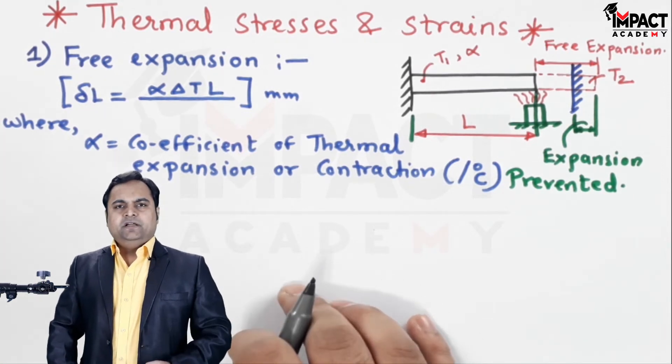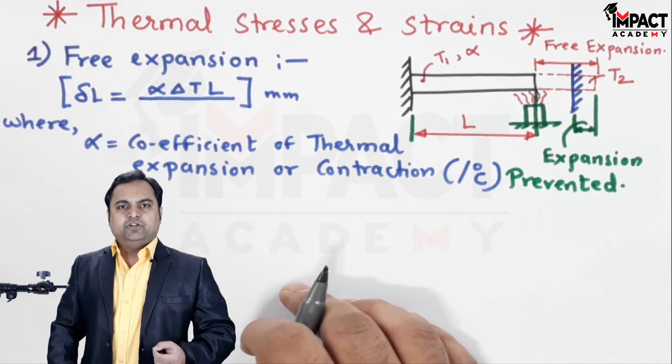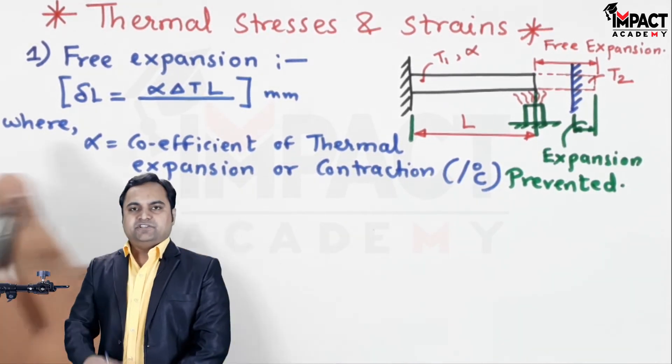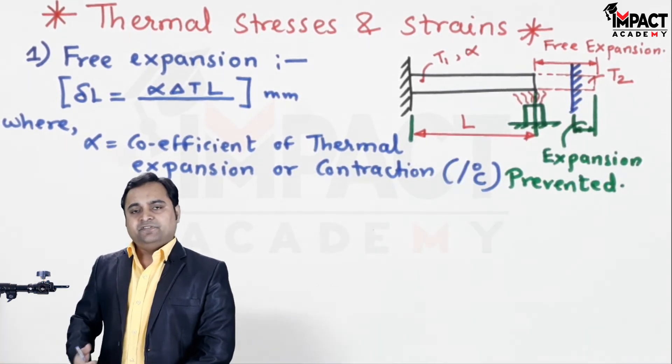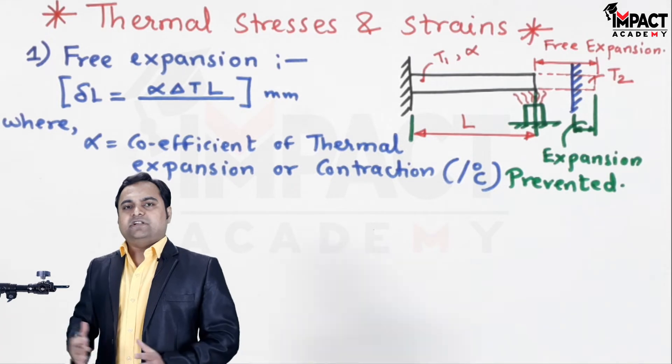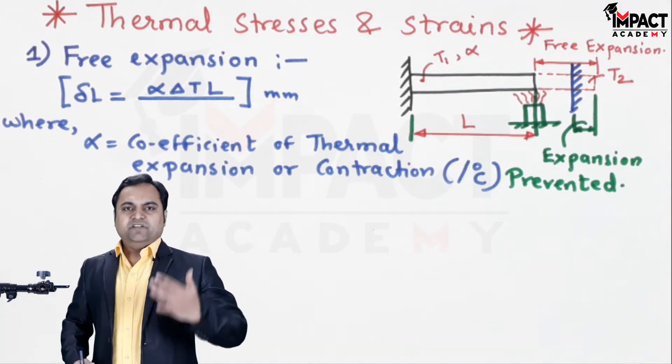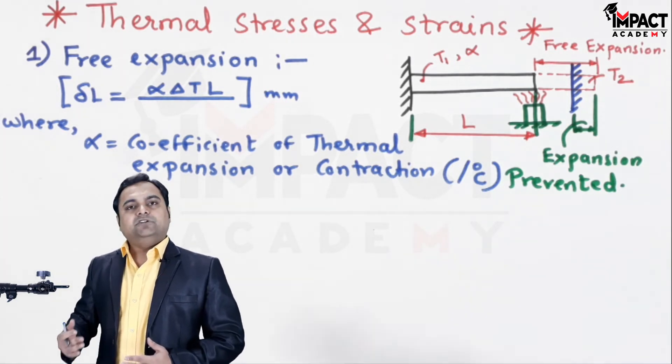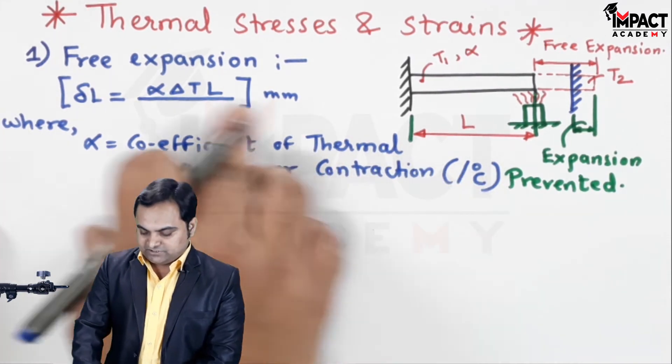And depending upon the value of alpha, the material will respond to change in temperature quickly or slowly. Because if the value of alpha is greater, it means the material is more sensitive to temperature difference and it will expand or contract more rapidly. But if alpha value is lower, it means that material will expand or contract slowly, and it is having a unit of per degree Celsius.